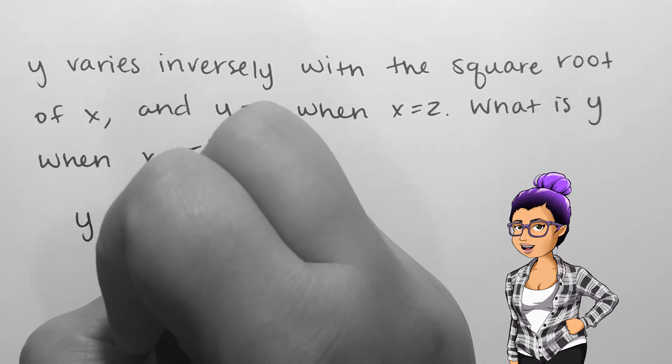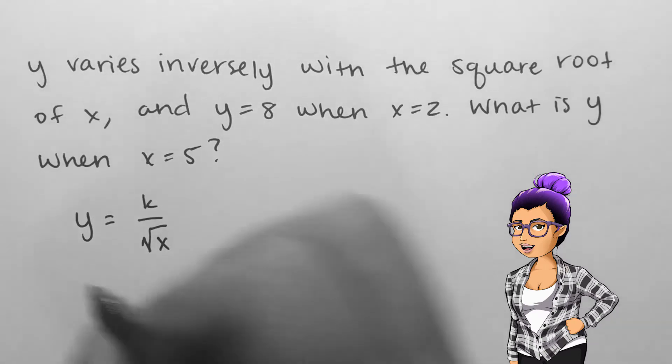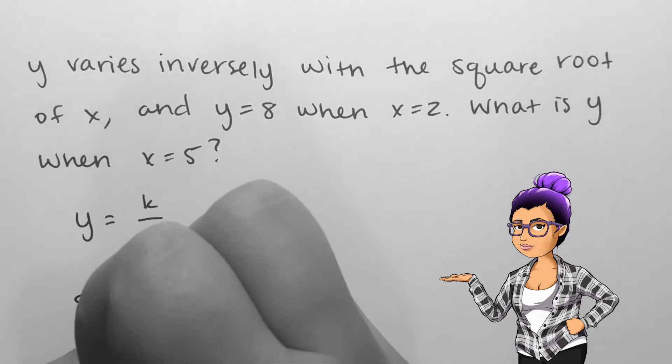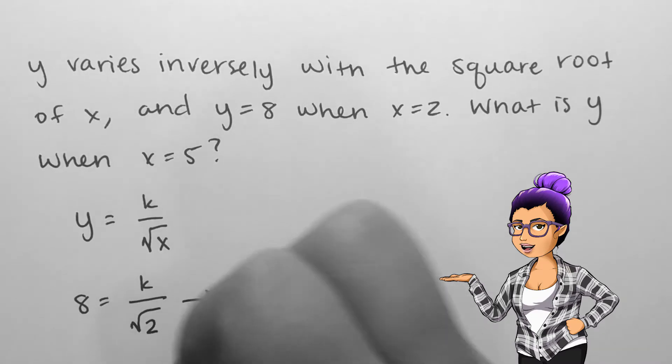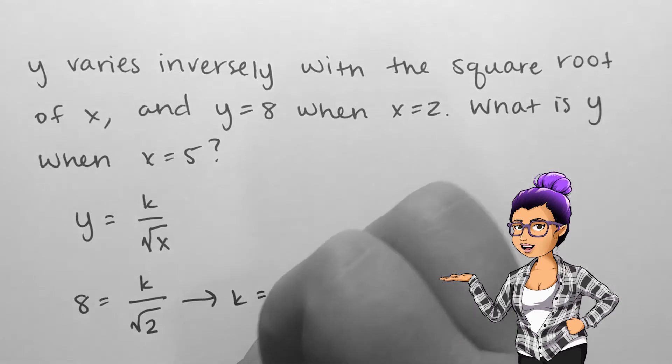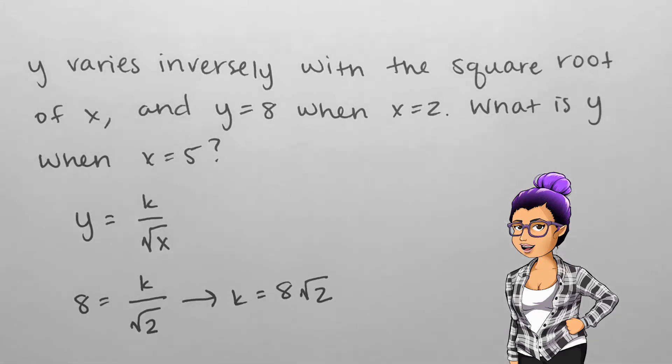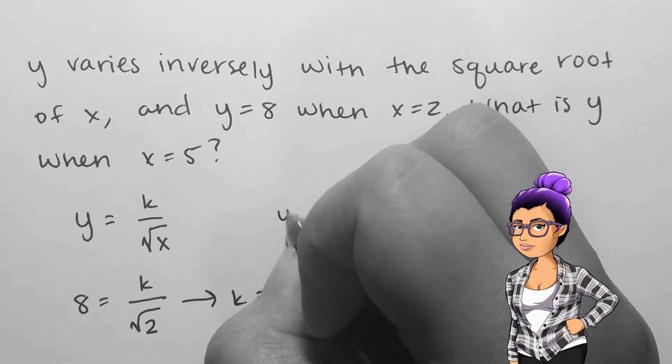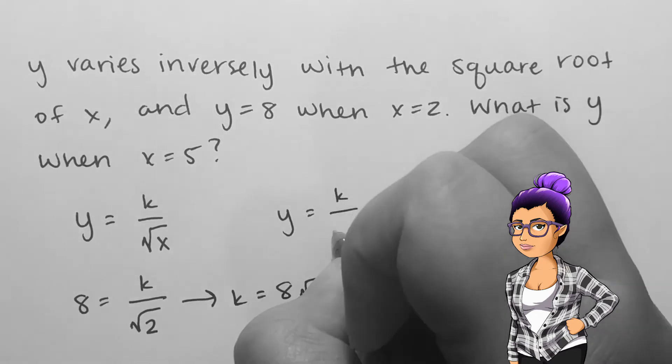We first write our inverse variation as y equals k over the square root of x. Now we can replace the y with 8 and the x with 2. This leaves us with solving for k, the constant. If I multiply by the square root of 2 on both sides, then k is 8 times the square root of 2.